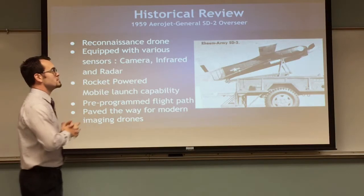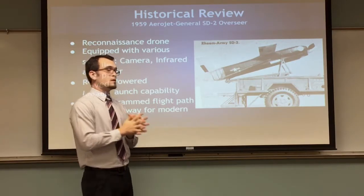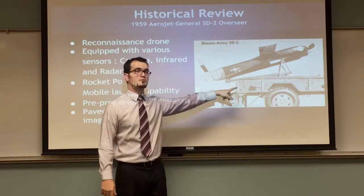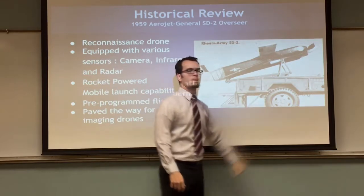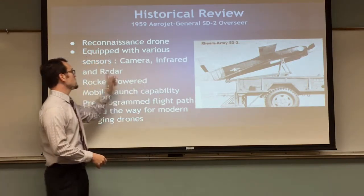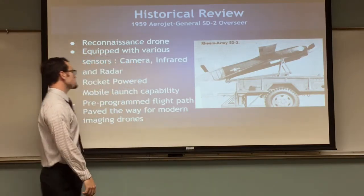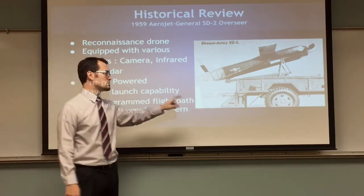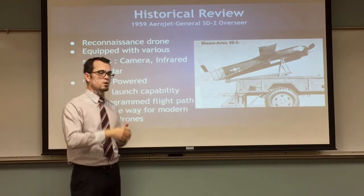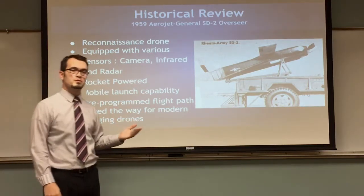In 1959, we have the Aerojet General SD2 Overseer. This is when reconnaissance drones were starting to be debuted, specifically for military and spying applications. The SD2 is shown being released from the back of a truck via two rockets. It was equipped with a camera, an infrared sensor, and a side-mounted radar so it could detect what was on land while turning. It had mobile launch capability and a pre-programmed flight path, though it wasn't used for very long because the pre-programming wasn't well developed. But it did pave the way for modern imaging drones.